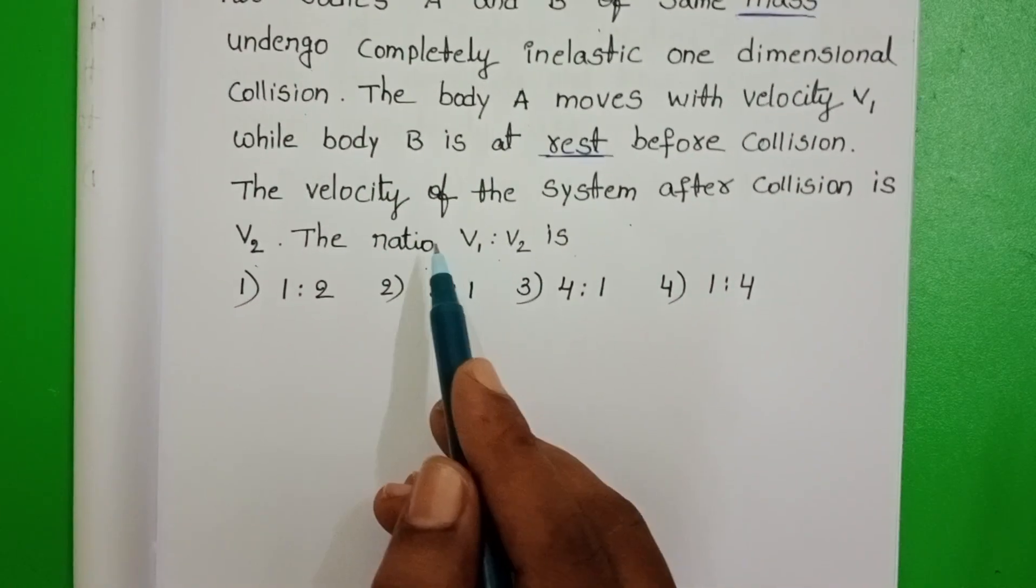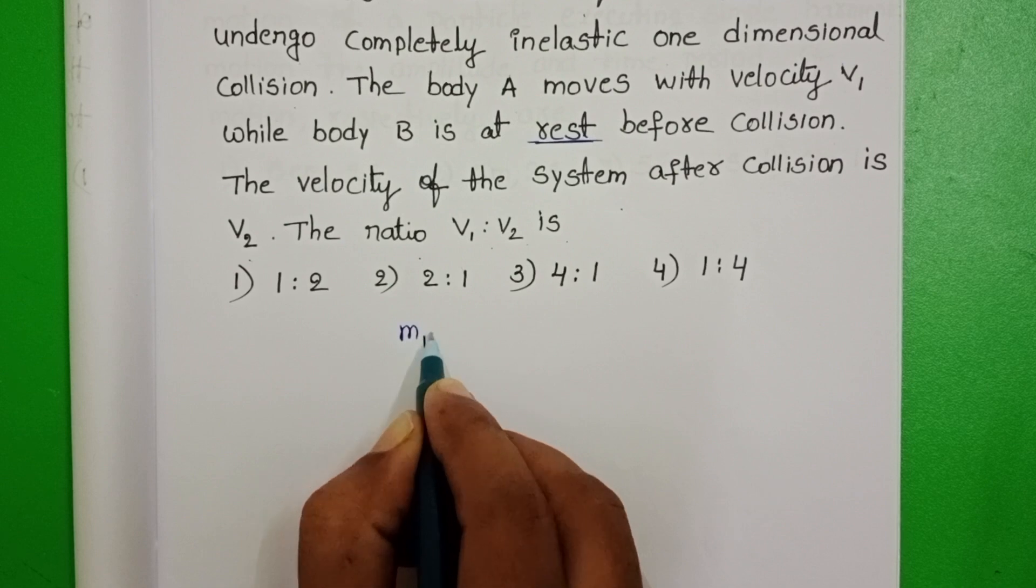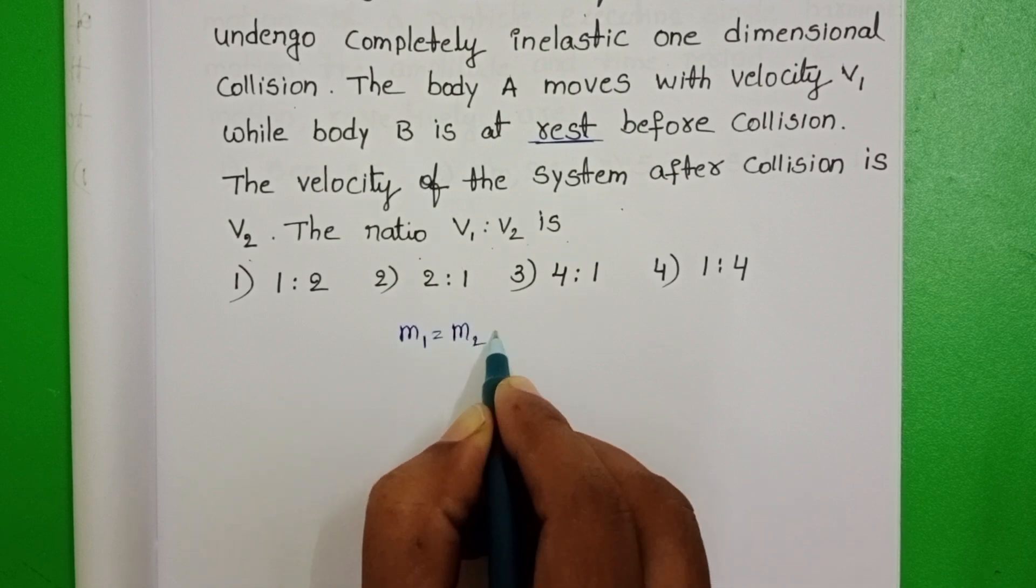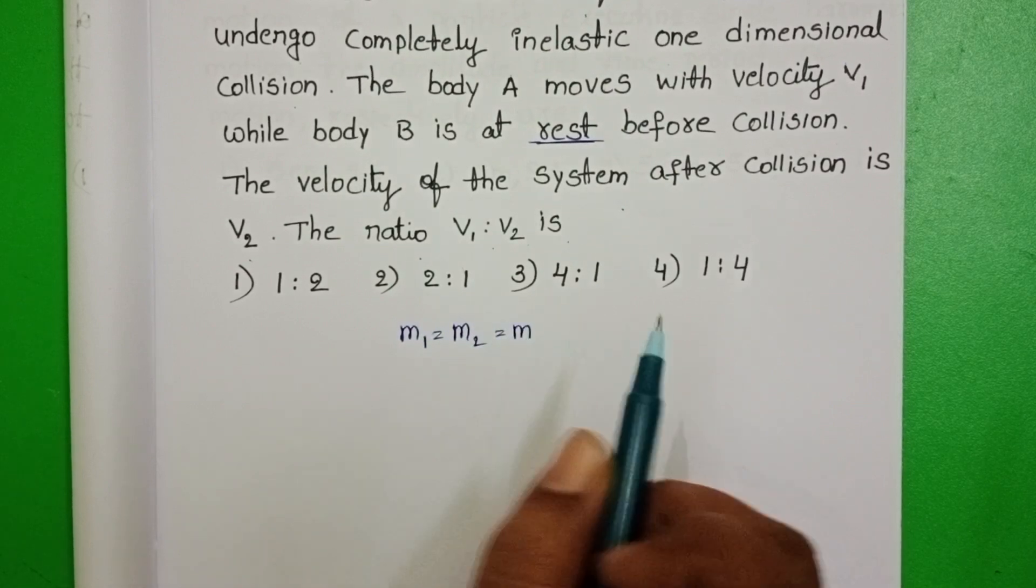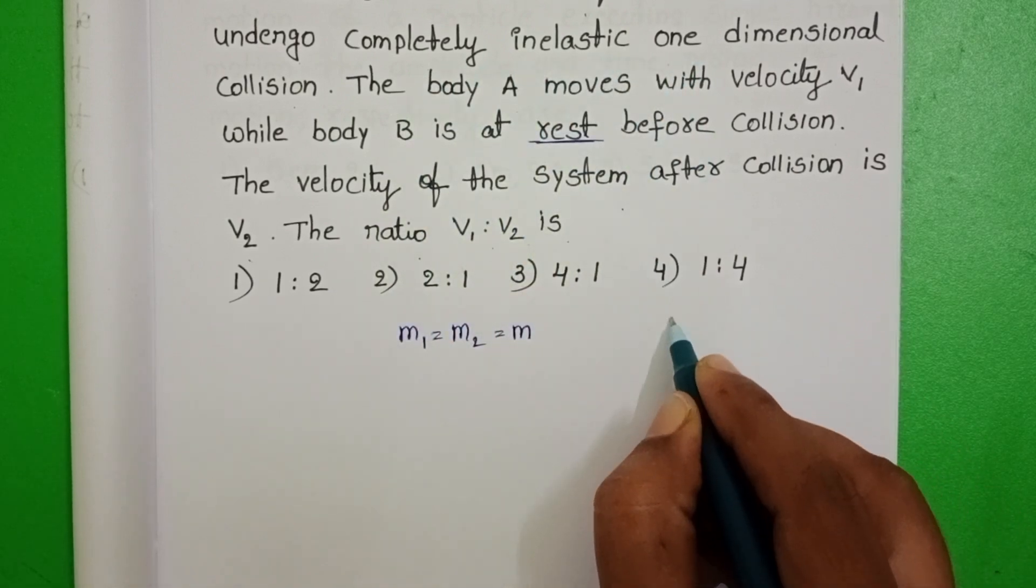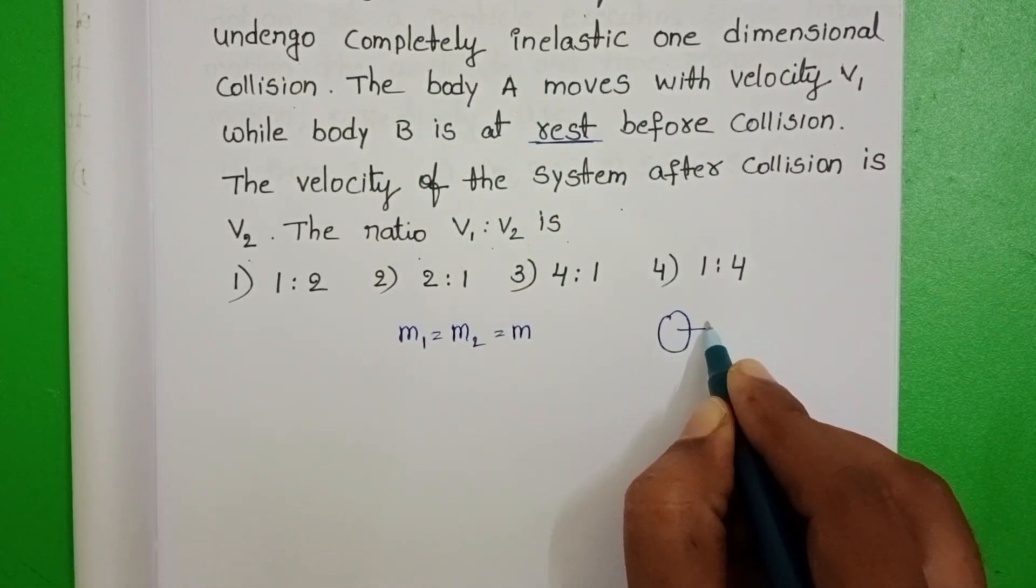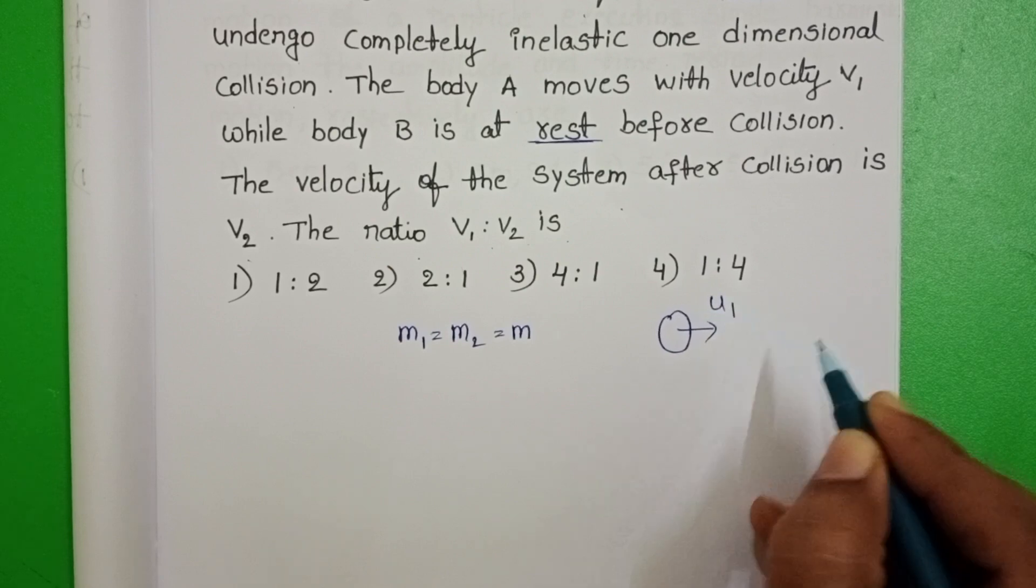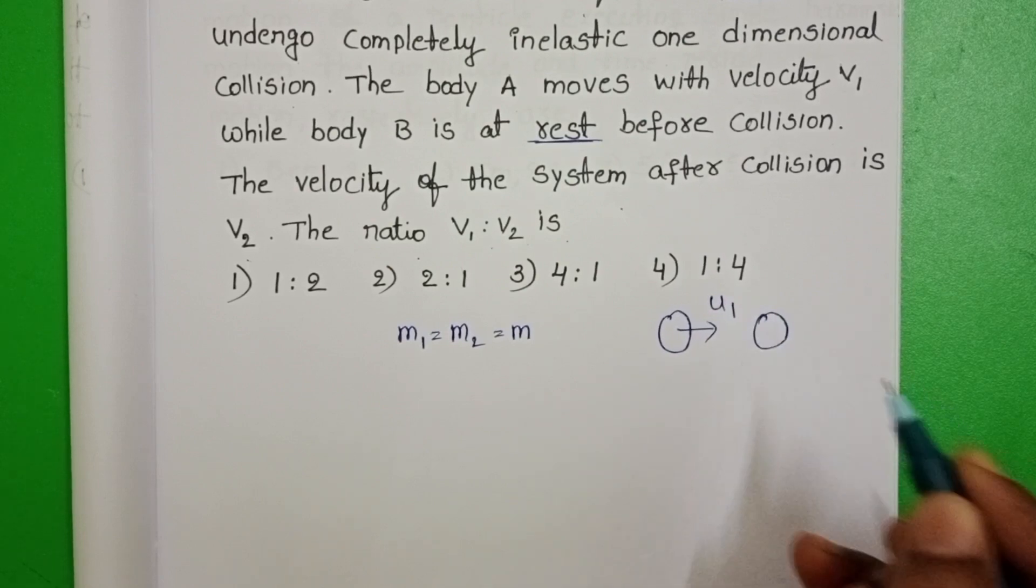In given question, two bodies of same masses, M1 equals M2 equals M. And it undergoes the completely inelastic collision. That means, first body is moving with certain velocity and second body is at rest position.